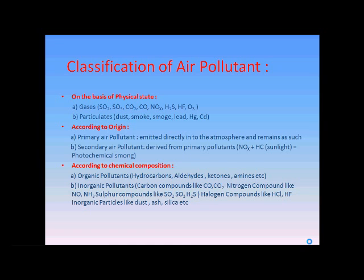According to chemical composition, pollutants are classified as organic pollutants — examples include hydrocarbons, aldehydes, ketones, amines, etc. — and inorganic pollutants. Examples of inorganic pollutants include carbon compounds like carbon monoxide and carbon dioxide, nitrogen compounds like NO and NH3, sulfur compounds like SO2, SO3, and H2S, halogen compounds like SCl and HF, and inorganic particles like dust, ash, silica, etc.